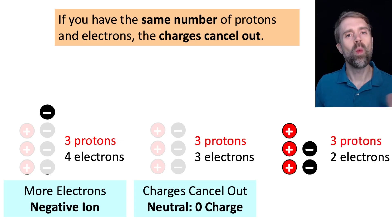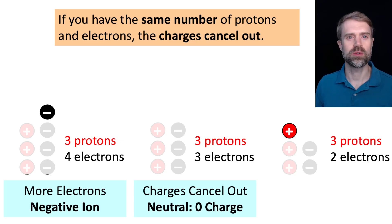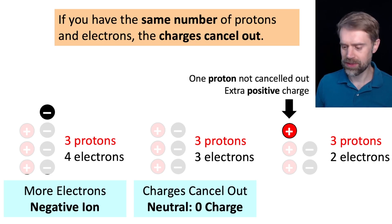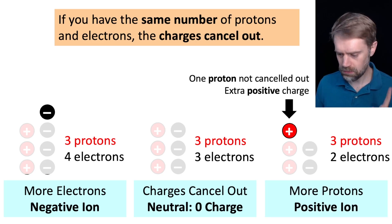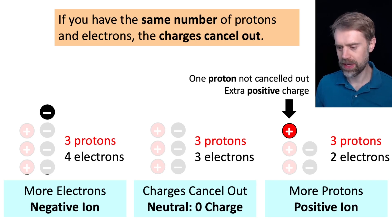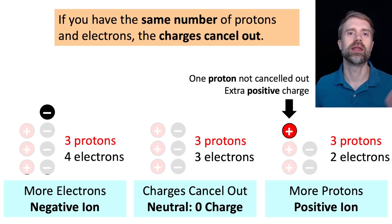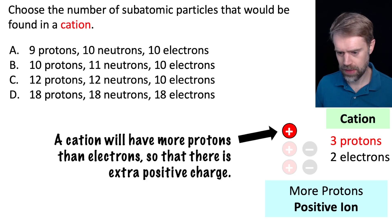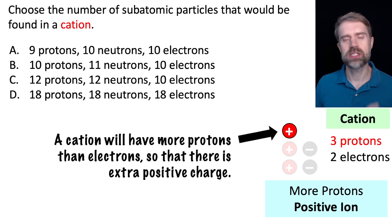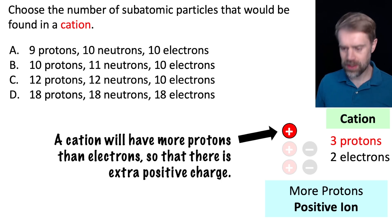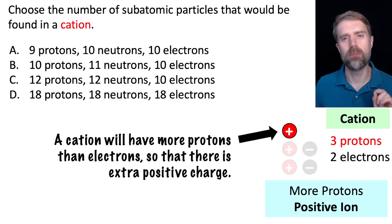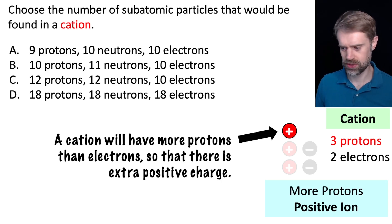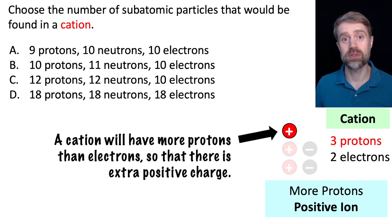Here's another situation: what if an atom has three protons and two electrons? Two protons and two electrons are going to cancel out, and we're going to be left with one proton that's not canceled out. That's going to give us an extra positive charge, because protons are positive. So the atom is going to have a positive charge and it will be a positive ion. The negative ion we can call an anion, and the positive ion we can call a cation. Going back to the question, a cation will have more protons than electrons — that's what gives us the extra positive charge.